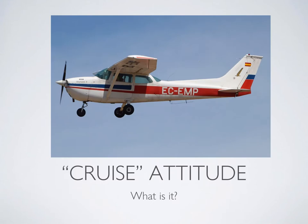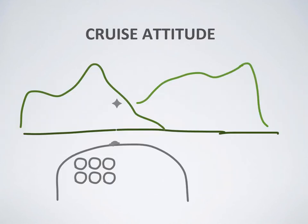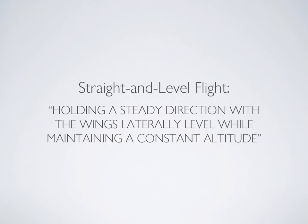We're going to be keeping the cruise attitude as a focal point and a baseline around which we'll build some advanced learning. For a review of what the cruise attitude is, you can see the slideshow for Exercise 5, but in case you need a quick refresher, this is what it looks like. Straight and level flight is defined as holding a steady direction with the wings laterally level while maintaining a constant altitude.